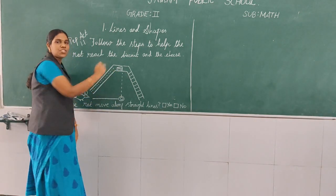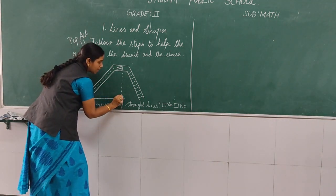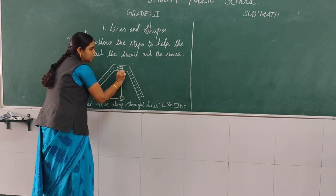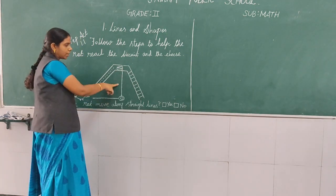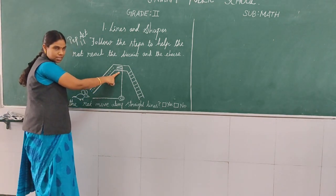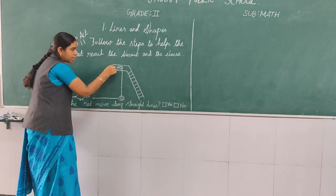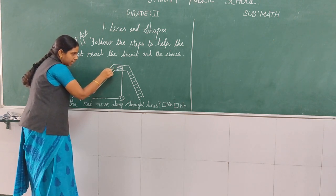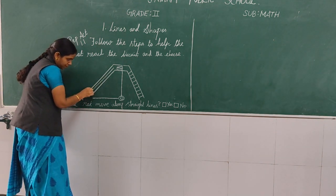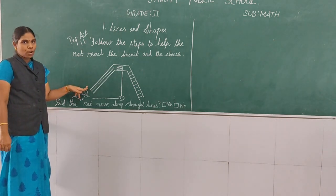Everyone finish. Trace this line. Now the rat is moving to eat the cheese. Okay children. Have you finished? Trace this line. Yes, very good. After eating the cheese, the rat will come down, isn't it? Yes. Now trace along with me children — the rat, after eating the cheese, will come down. Have you completed this trace?